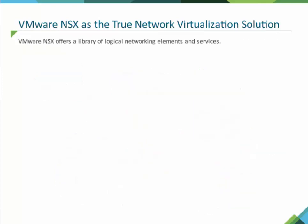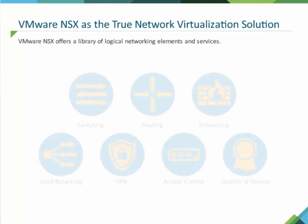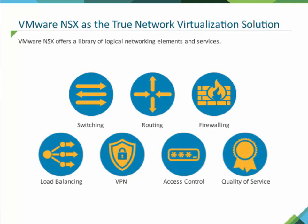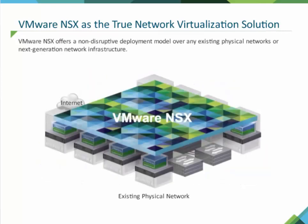VMware NSX offers a library of logical networking elements and services, such as logical switches, routers, firewalls, load balancers, VPN, and workload security. Users can create isolated virtual networks through custom combinations of these capabilities. VMware NSX offers a non-disruptive deployment model over any existing physical networks or next-generation network infrastructure.